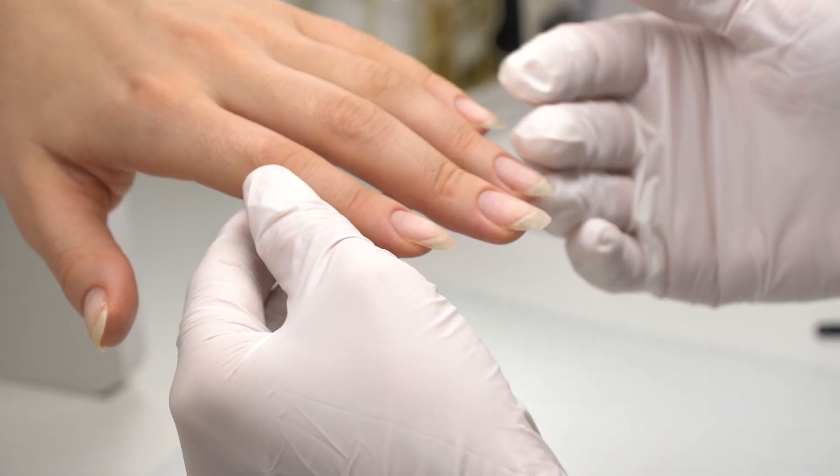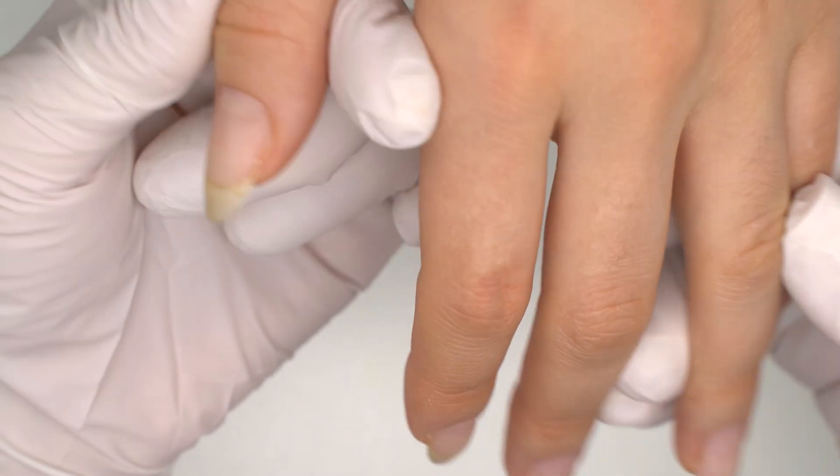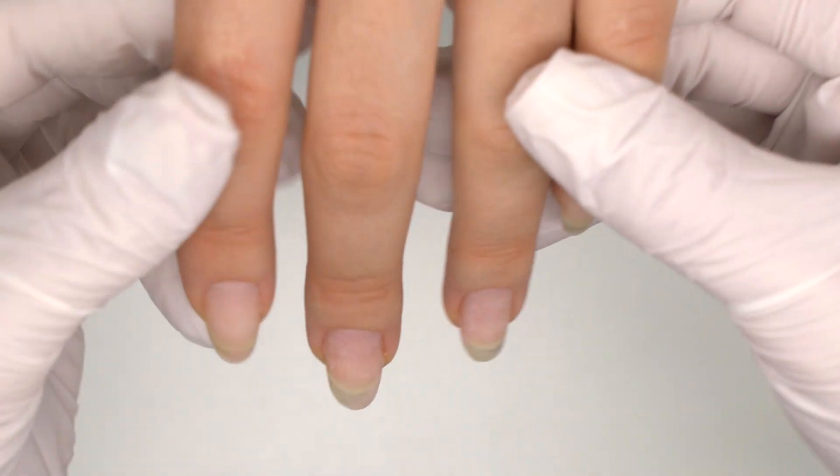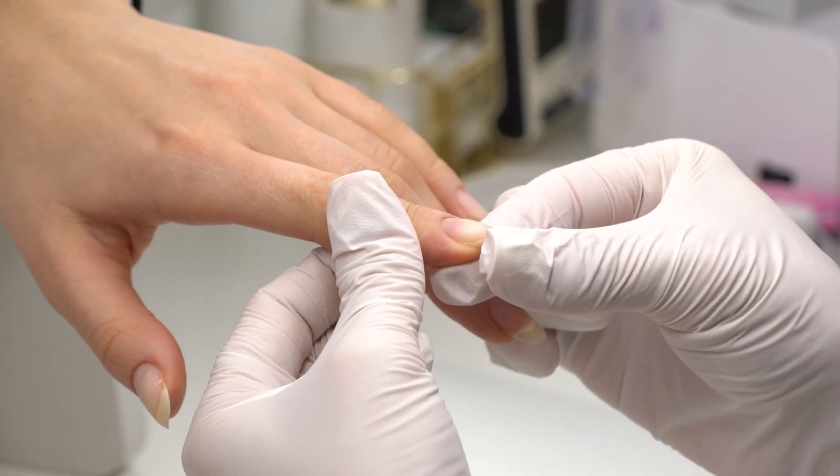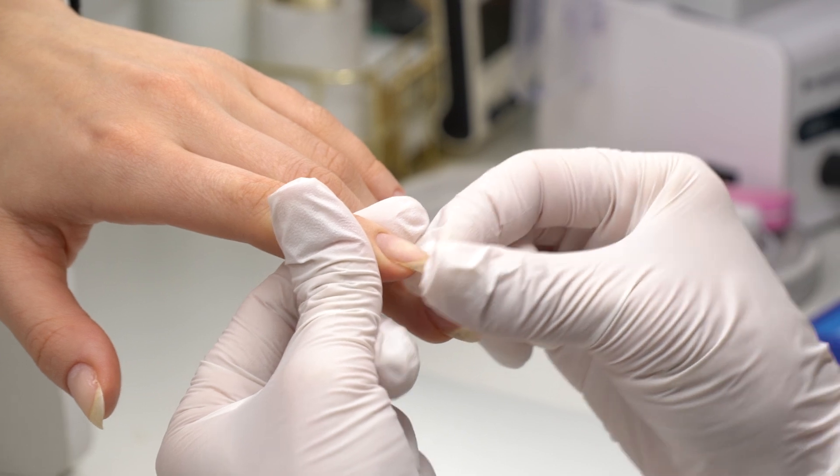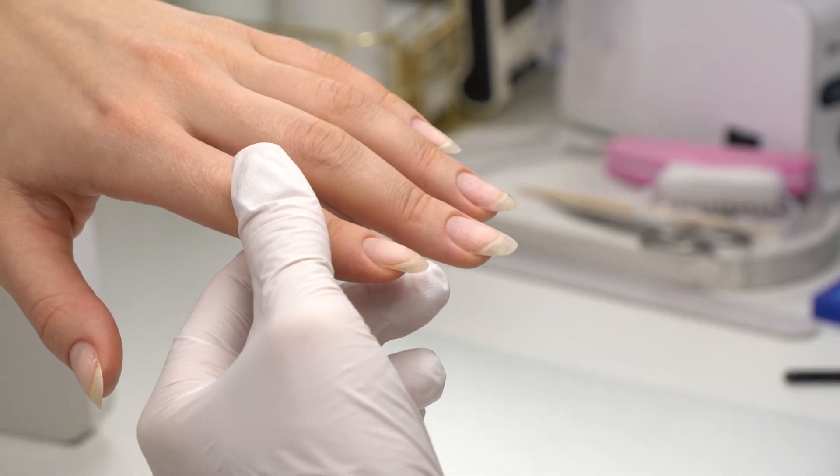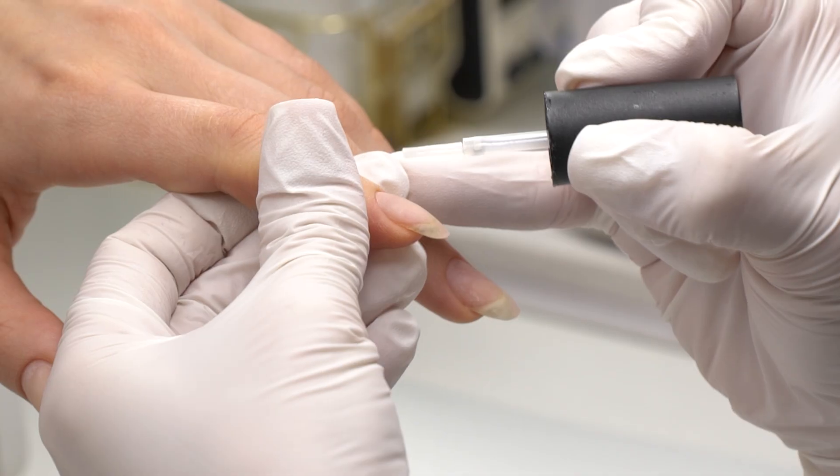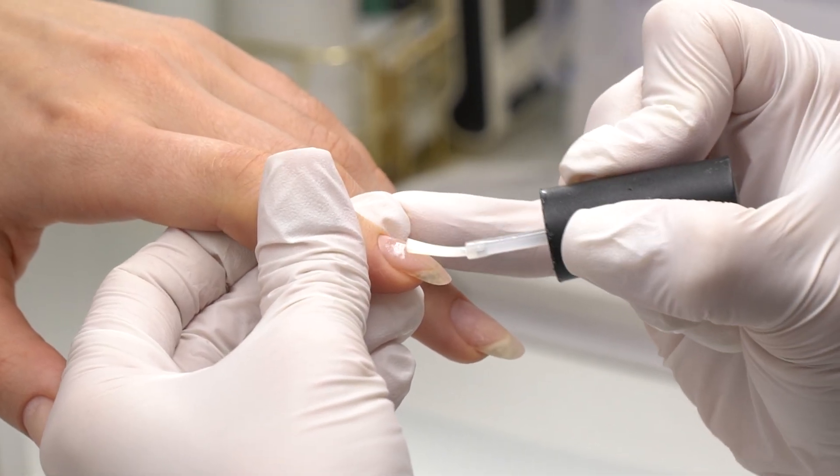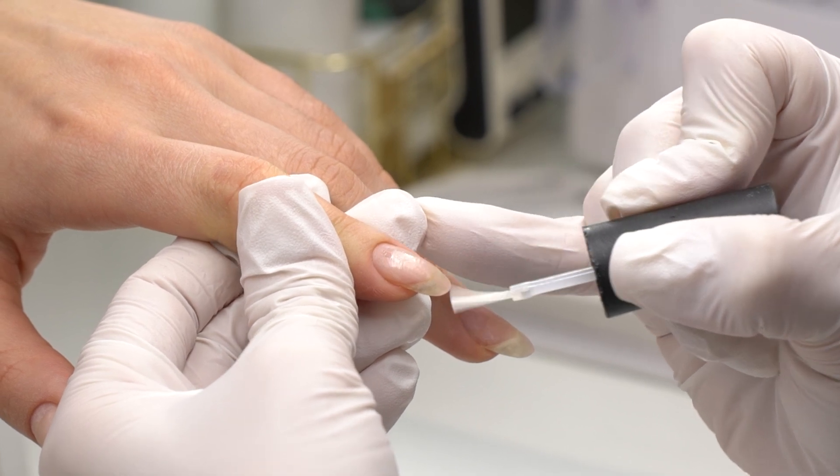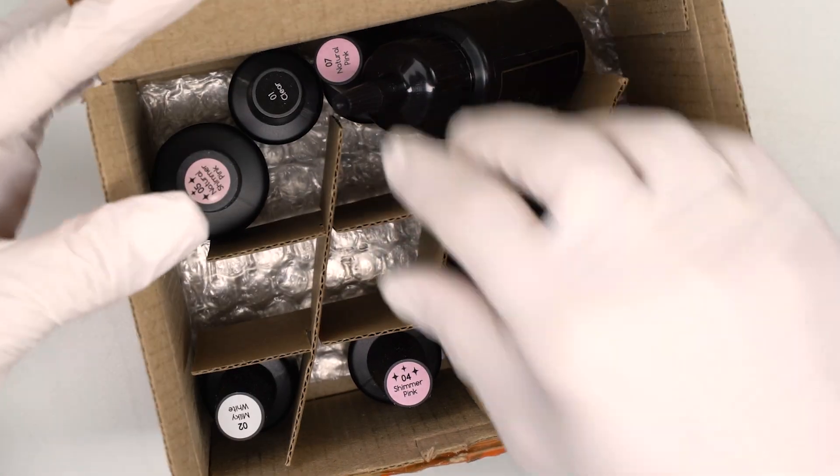I have already prepared the nails and done a manicure, so they are ready for a base coat. These are medium-length nails. If they were longer, I would have used solid materials such as liquid polygel, gel, and so on and so forth. But today I'm going to use base coats.